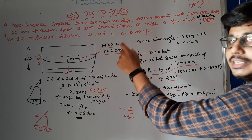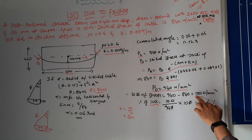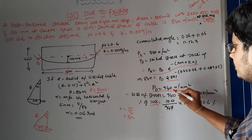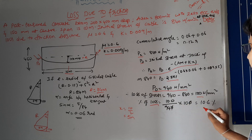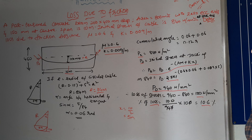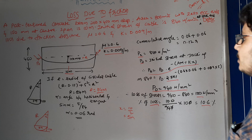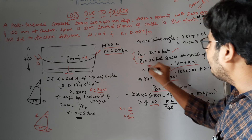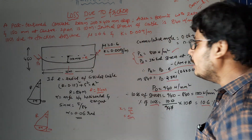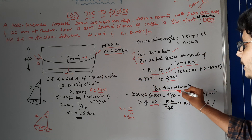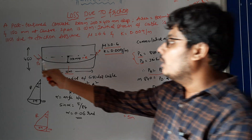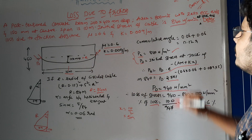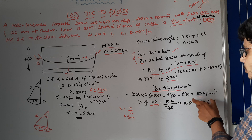The loss of stress due to friction is 100 N/mm². To find the percentage of loss: (100 / 940) × 100 = 10.6 percent. So the percentage loss due to friction is 10.6%. To clarify: Px (840) is the pre-stress force at one end, P0 (940) is the overall initial stress. The difference between both stresses gives the loss of stress due to friction.